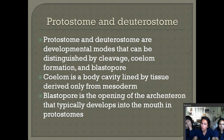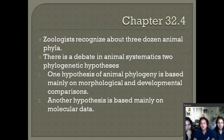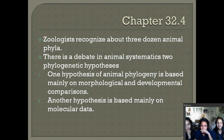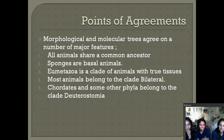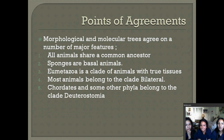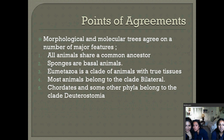Section 32.4 is basically about zoologists recognizing three dozen animal phyla, and debates on why so many different animal phyla exist. One hypothesis is that animal phyla are based mainly on morphological and developmental comparisons, and another is based mainly on molecular data. Morphological and molecular analyses agree on several major features: all animals share a common ancestor; sponges are basal animals; Eumetazoa is a clade of animals with two tissues; most animals belong to the clade Bilateria; and chordates and some other phyla belong to the clade Deuterostomia.